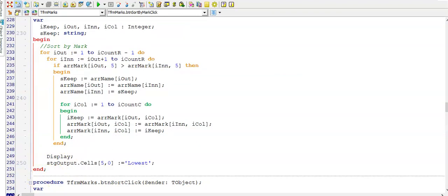And this is sorting the mark according to the learner's lowest mark. There we go. We are comparing the value in the fifth column and then swapping them around. And then calling my display procedure. I just added this to my cells so that I can display in row 0 the fifth column. I'm displaying the label lowest.